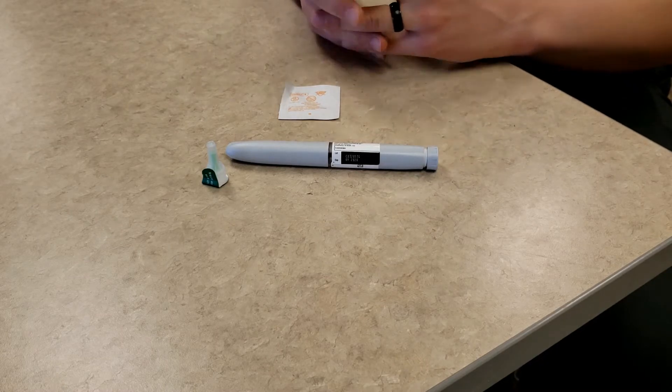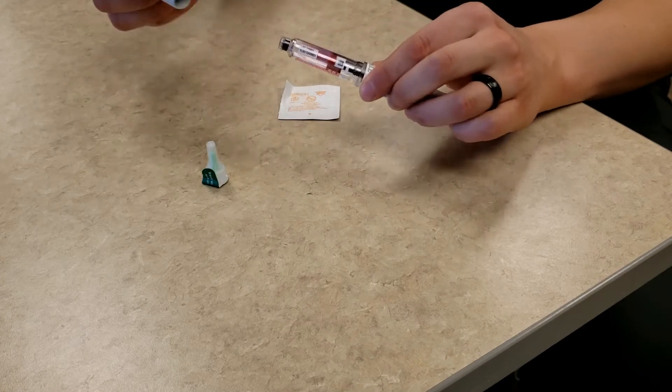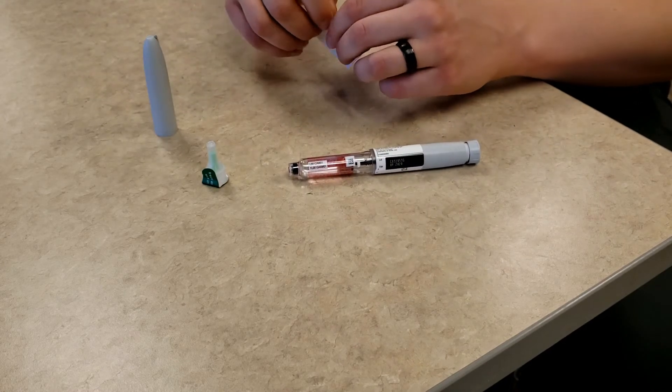The first step is to remove the cap from the insulin pen and use your alcohol wipe to clean the rubber stopper on the end of the pen.